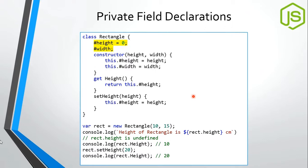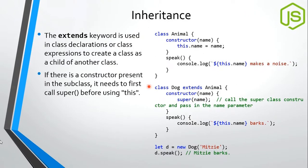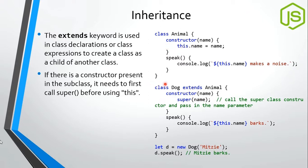Inheritance in ES6 classes is very similar to Java. We use the extends keyword to indicate a class is a derived class — for example, Dog extends Animal. We use the super keyword to call the base class constructor and pass variables to it. The first statement inside the derived class constructor should be super. Instance variables of the parent class, like this.name, can be accessed in child class methods.